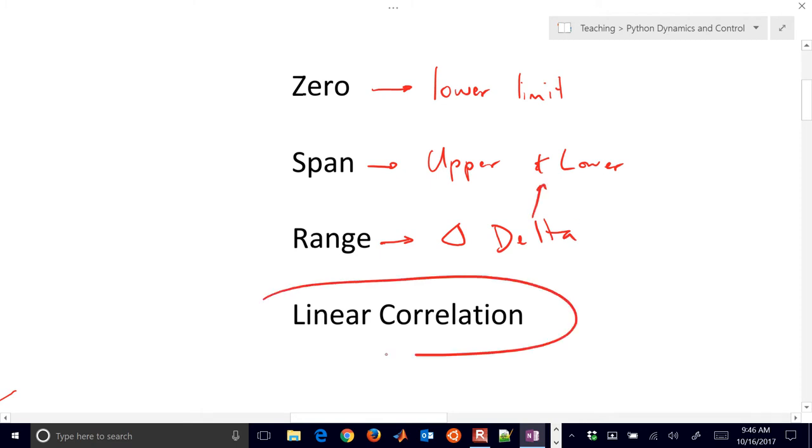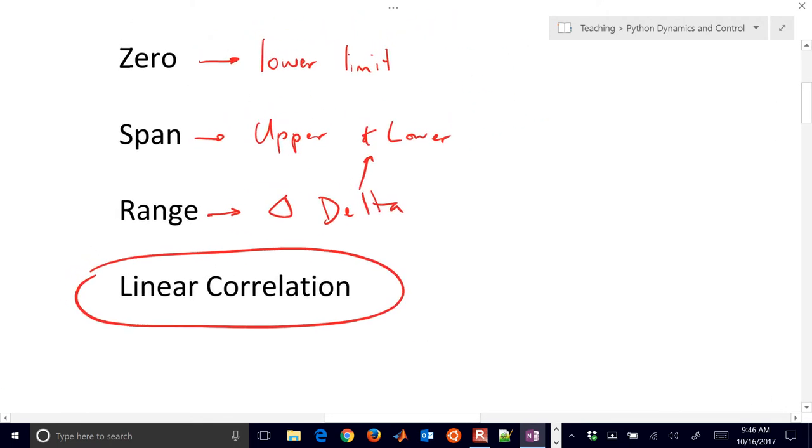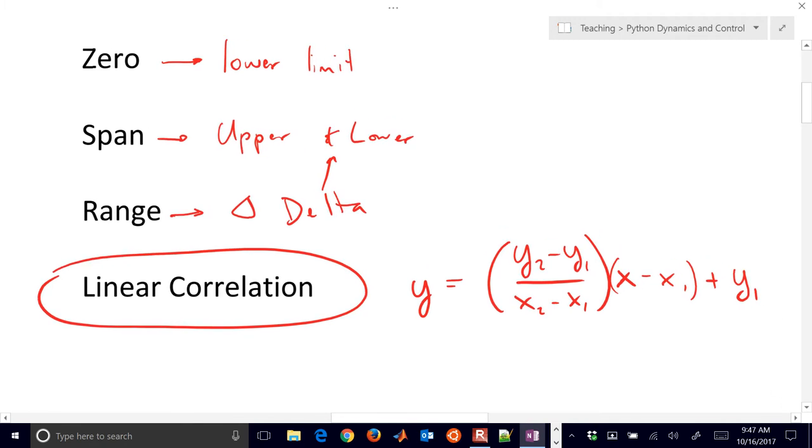And this is the delta or the change between the upper and lower. And then a lot of times we will develop a linear correlation for our sensor as well. So for example, if we want to just do a line, we'll do y2 minus y1, x2 minus x1 times x minus x1 plus y1. And that develops our equation of a line. So that if we have different inputs, we can predict different outputs.